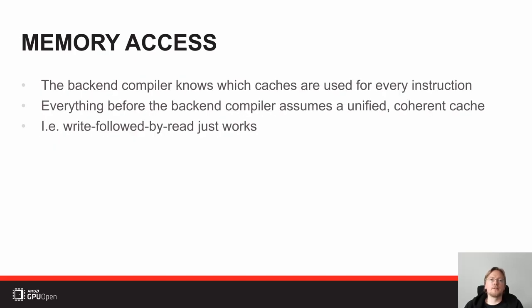Let's start with memory access. Memory access in the frontend is fairly easy — you read from a location, you write to a location, you read again and get a new value. Some things like the Vulkan memory model might tell you to issue a kind of barrier, but generally speaking this is how things work, especially in D3D11 where there's no special barrier defined for this. The hardware doesn't look like this, though — the hardware actually has separate caches.